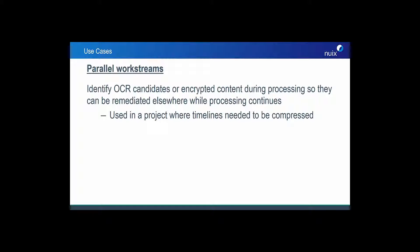In our second example, we will discuss how we can perform parallel work streams to expedite certain workflows if there is a time crunch. We'll look at how you can identify OCR candidates or encrypted content during processing so they can be remediated elsewhere while processing still continues. Think about how you might leverage this scripted workflow to export items to disk if they are of a certain type or kind, or if they match specific dates or keywords. Being able to do this while loading the data — and not having to wait until the case is done — can help save you time and money and give you access to your OCR candidate data as soon as it's been processed.